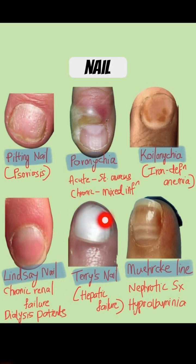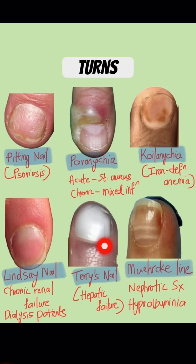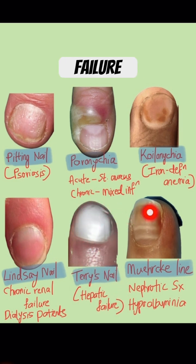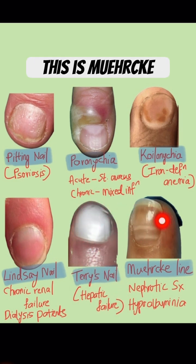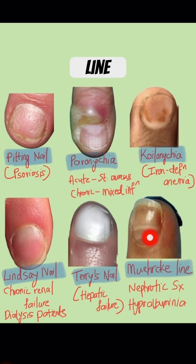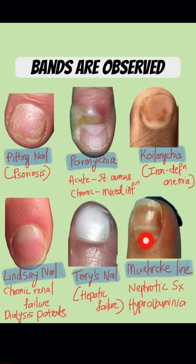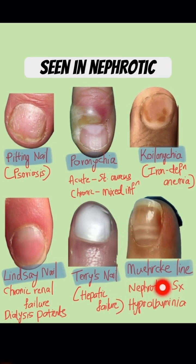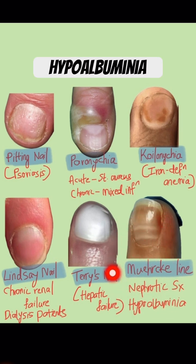This is Terry's nail where almost the entire nail turns white, seen in hepatic failure. This is Muehrcke's lines where parallel transverse white bands are observed, seen in nephrotic syndrome and hypoalbuminemia.